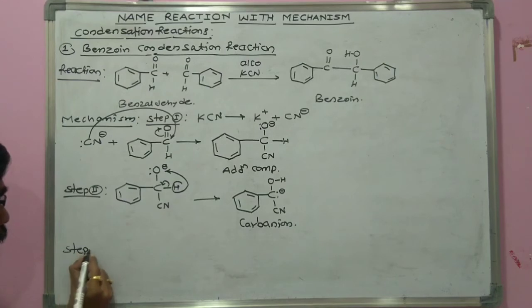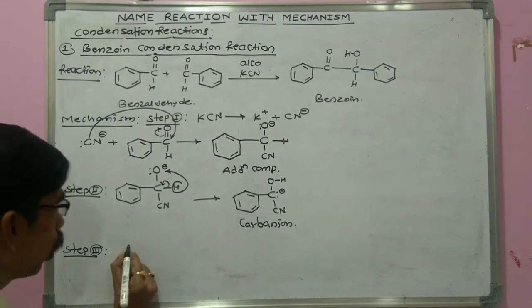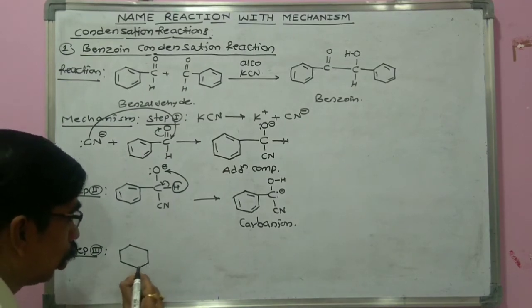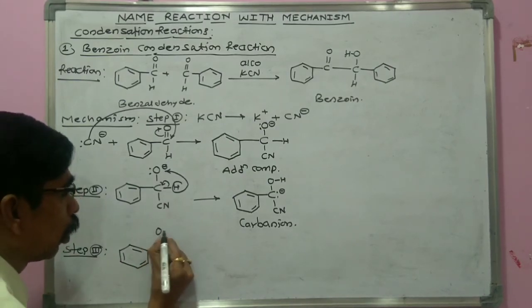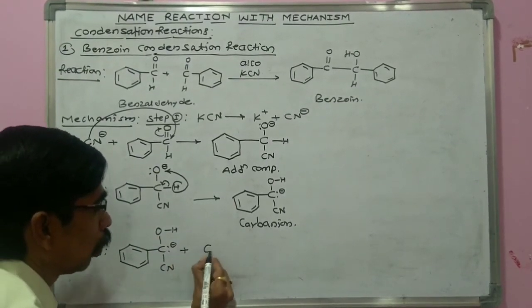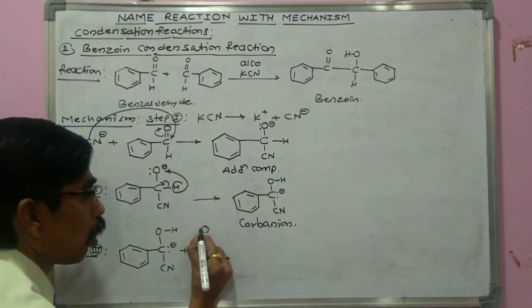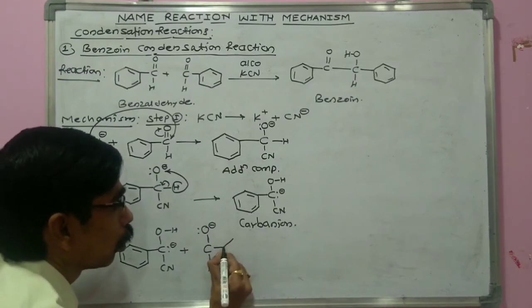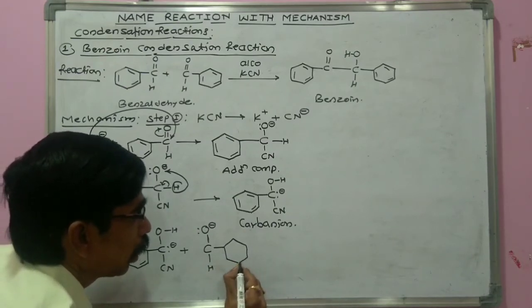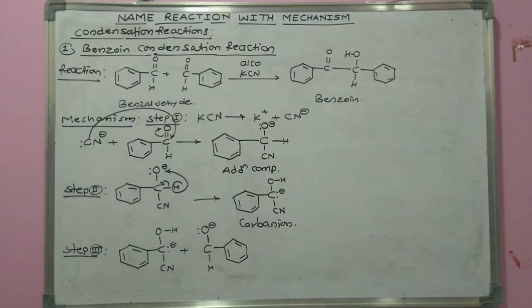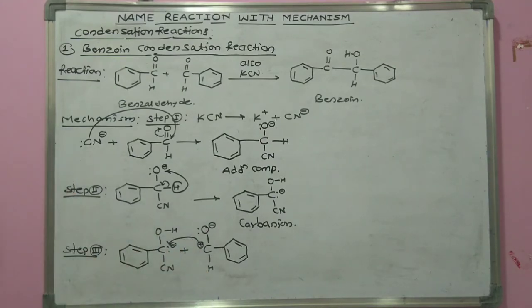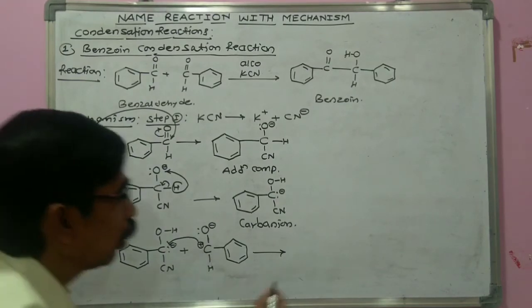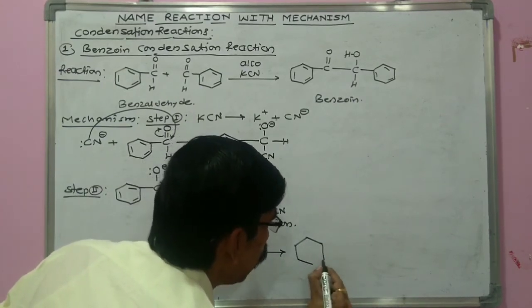Step three: the carbanion obtained in the second step combines with the second molecule of benzaldehyde, in which the negatively charged carbon atom links with the positively charged carbon atom. A bond is formed between this negatively charged atom and the positively charged carbon atom to form an addition compound in the second step.